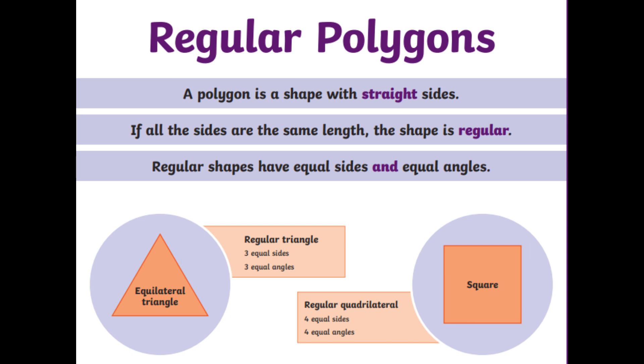So on the screen, you should see a couple of shapes and they are examples of regular polygons. So a polygon is a shape with straight sides. If all the sides are the same length, the shape is regular. Regular shapes have equal sides and equal angles. So if you look at the two examples, we've got an equilateral triangle, which has three equal sides. They're all the same length. And the three angles are all the same size as well.